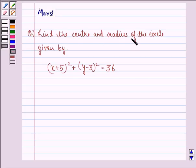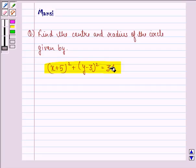Find the center and radius of the circle given by (x+5)² + (y-3)² = 36.